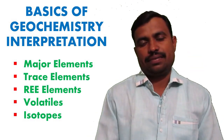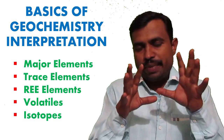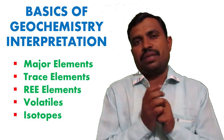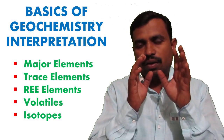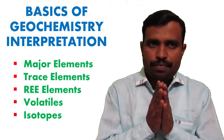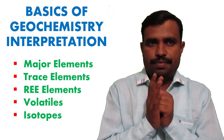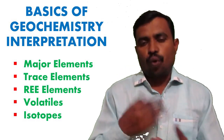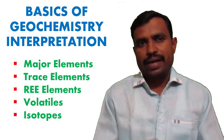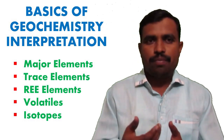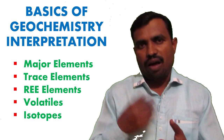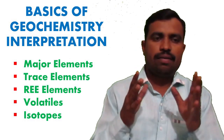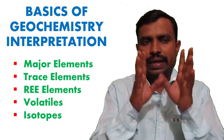The second type is trace elements — those whose concentration is less than 0.1 weight percent. Important trace elements in igneous rocks are nickel, chromium, cobalt, scandium, vanadium, strontium, barium, rubidium, zircon, hafnium, niobium, tantalum, uranium, thorium, and lead.